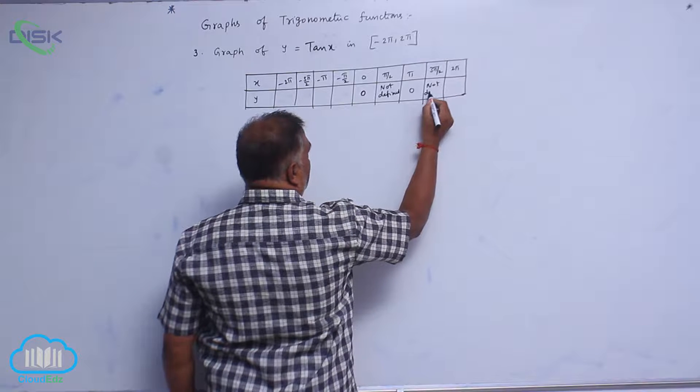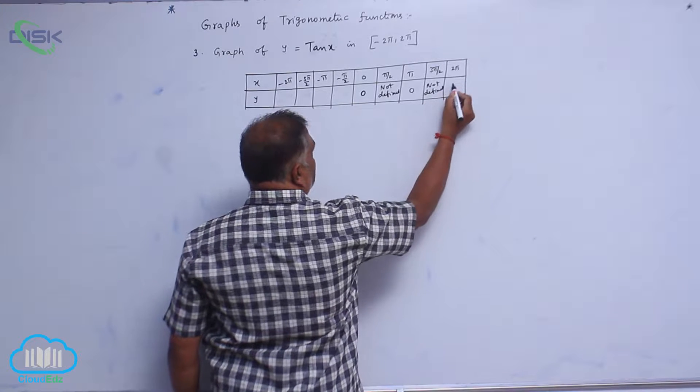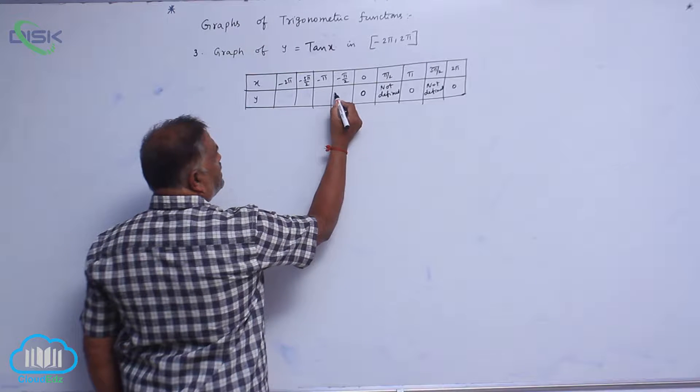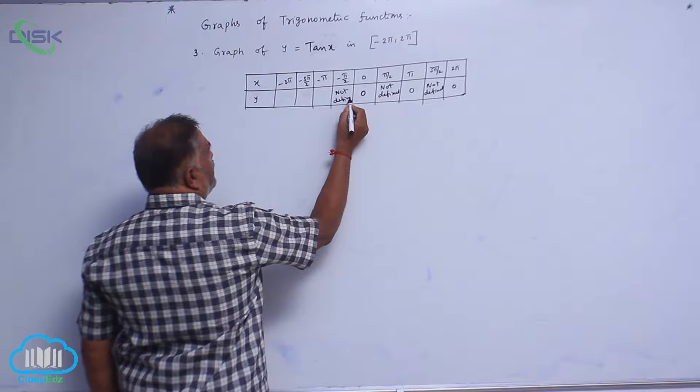Tan 3π by 2 is also not defined. Now, this is tan 2π, which is 0. Again, this is not defined. Alternatively, it will come like this.